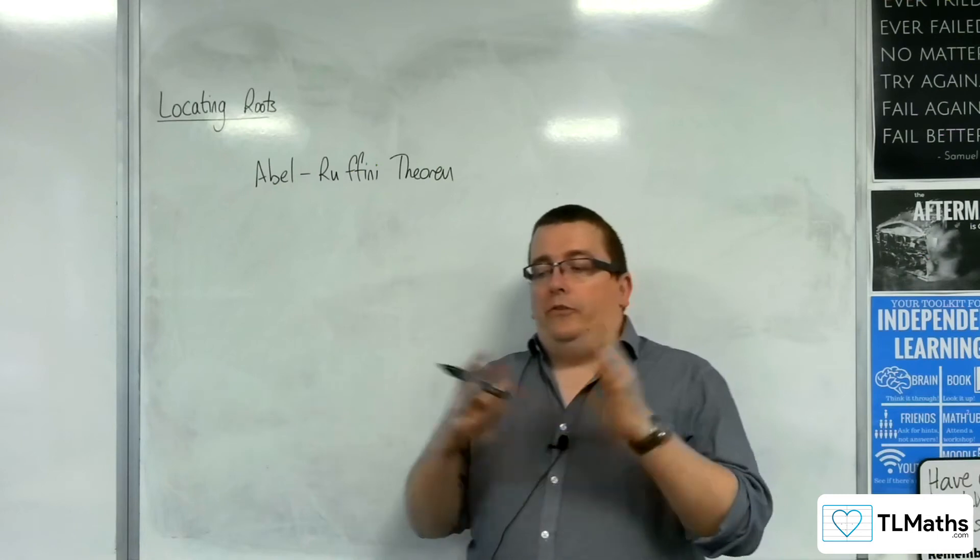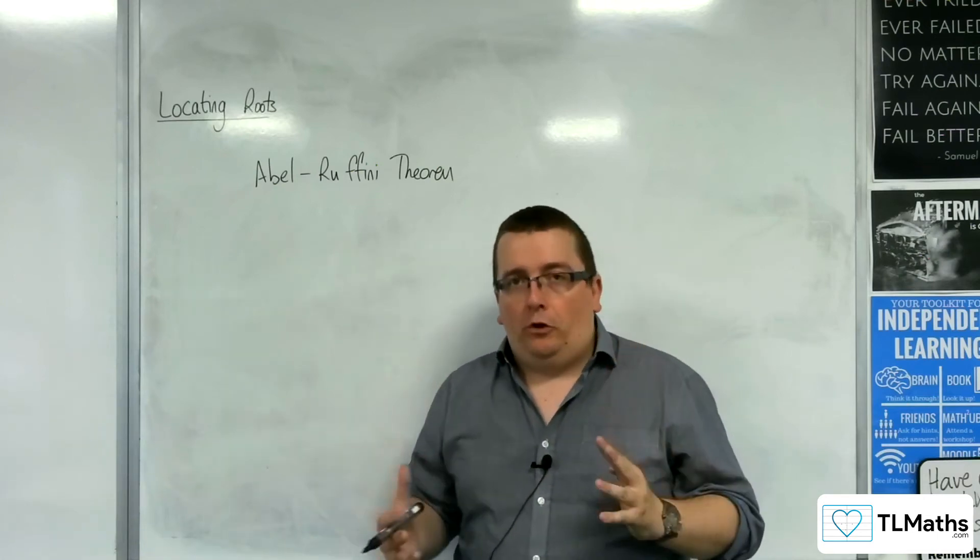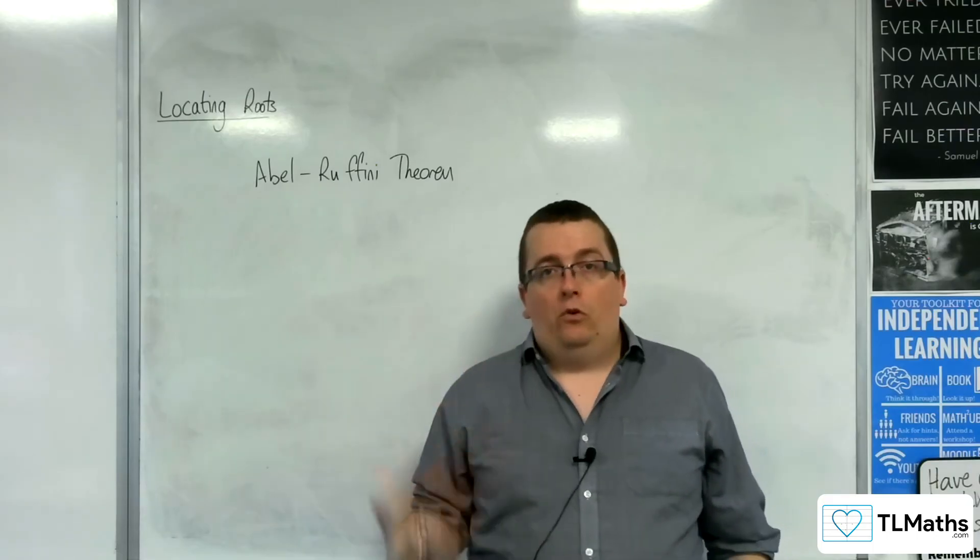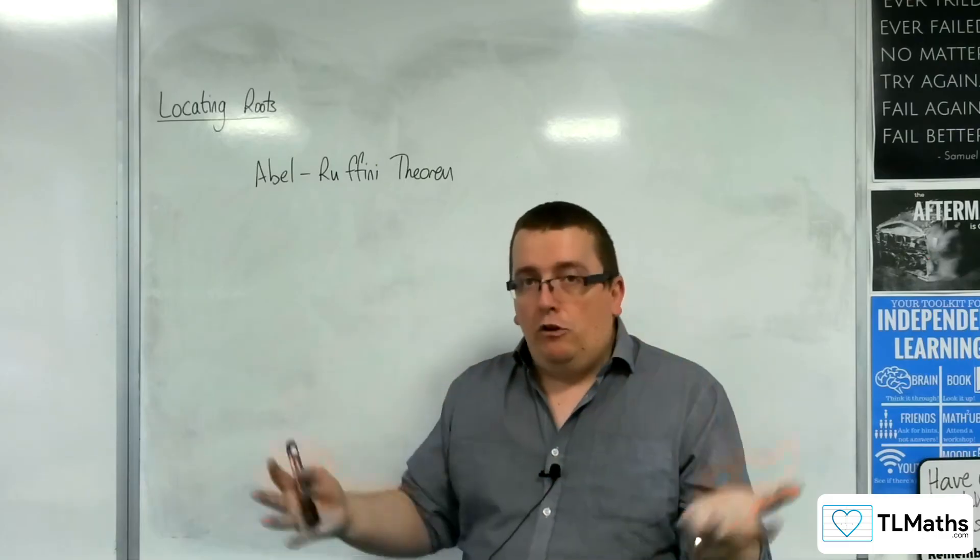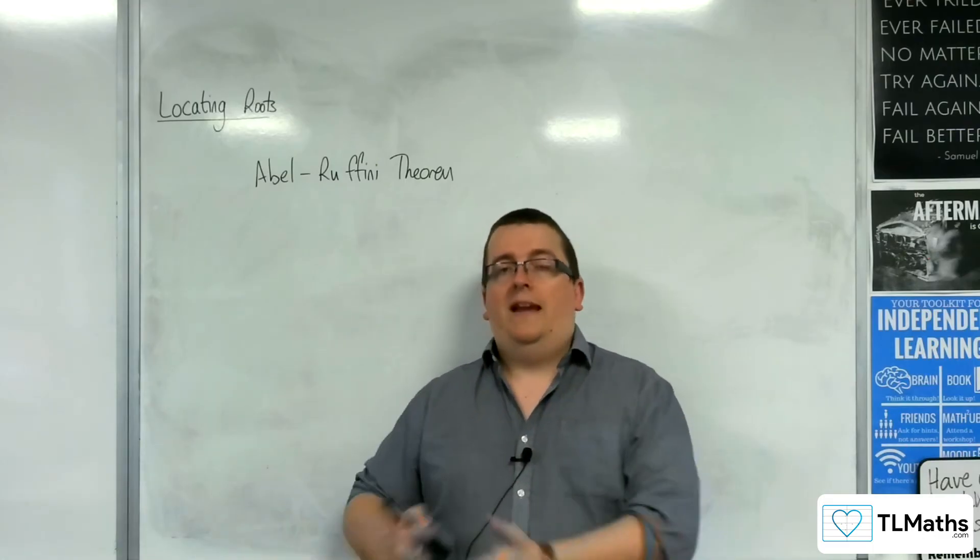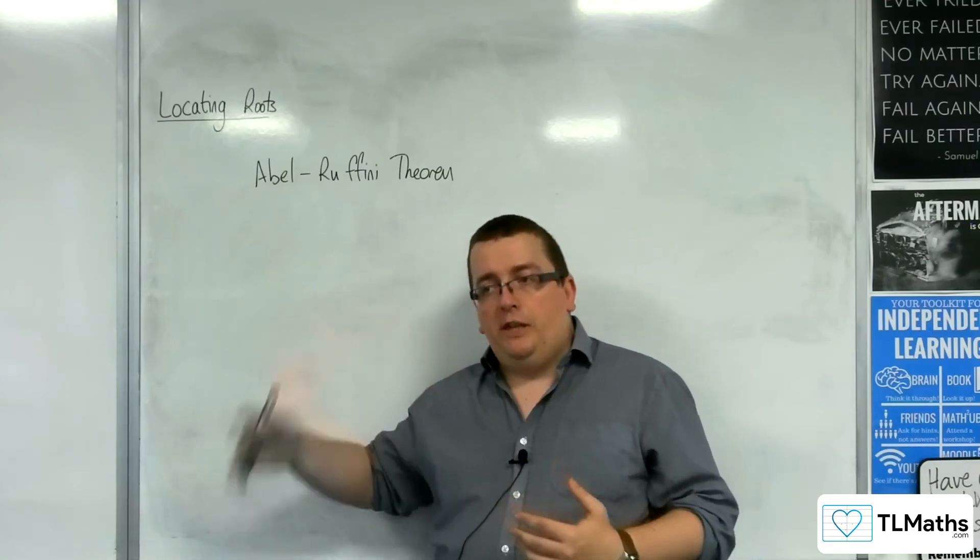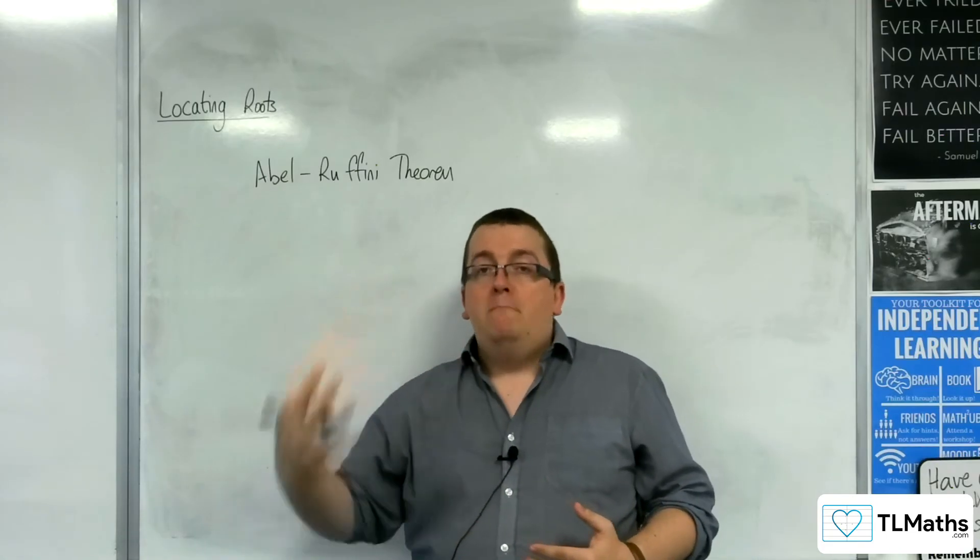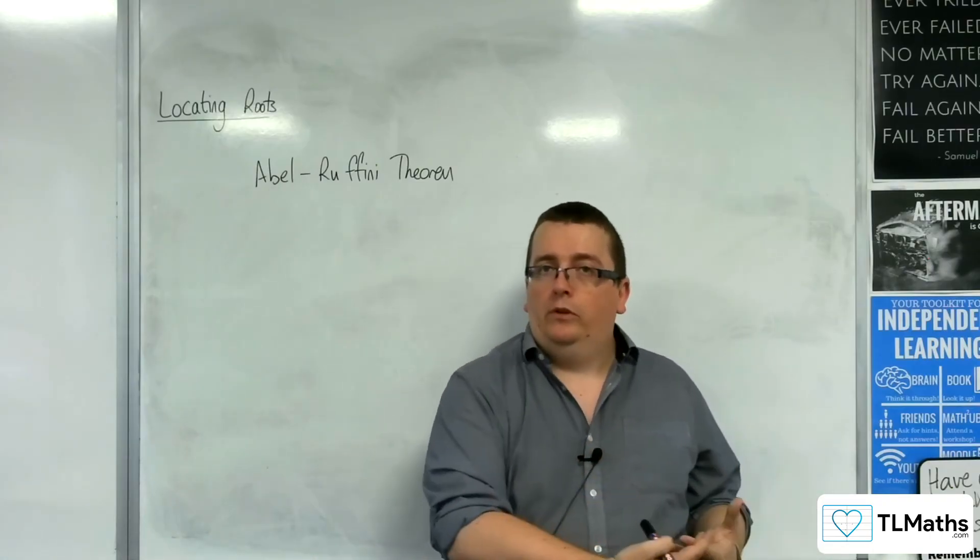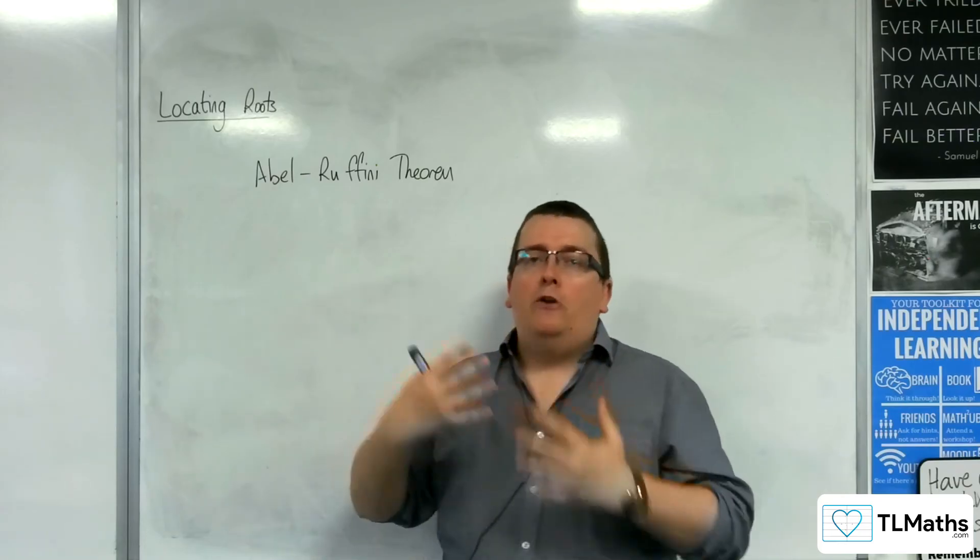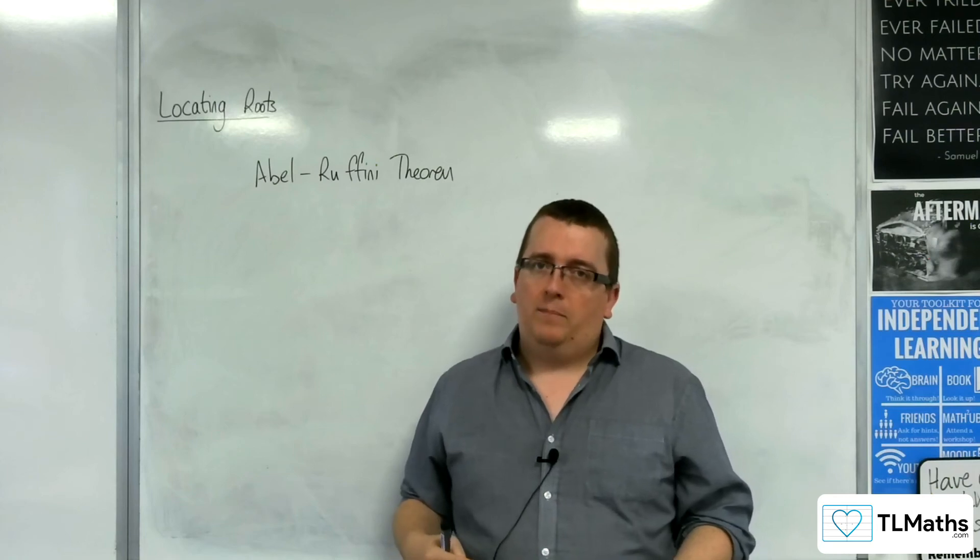The Abel-Ruffini theorem states that there is no general formula to solve a polynomial of degree five or higher. Which means that our algebra can't go there. It doesn't work, which leads us to then have to use some numerical methods in order to solve those equations, to find those roots, to locate where those graphs cross the x-axis, and that is what this section is going to be about.